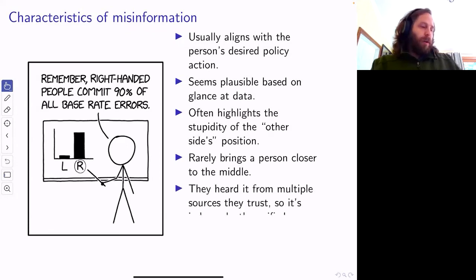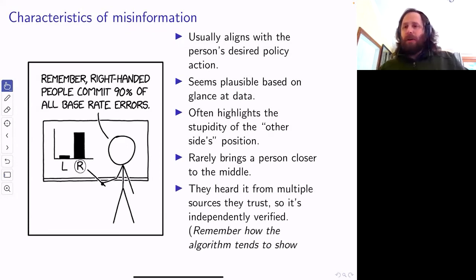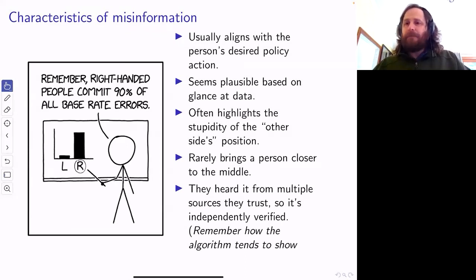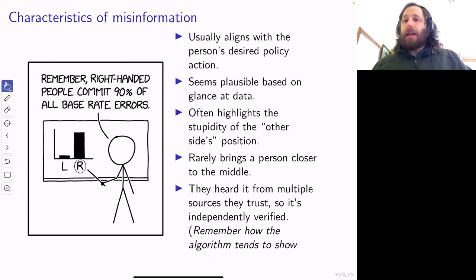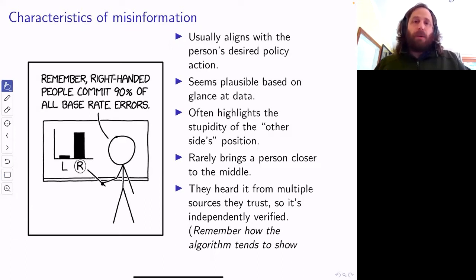The problem with multiple sources is that you think they're independent. Your brain naturally assumes 'hey, I've heard this from five people, they're independent.' But Twitter or Facebook is actively showing you certain types of content. The content starts from one person, gets to three or four other people, they repeat it, and all of a sudden you're hearing it from three or four sources you think are independent — but they aren't. It's a consequence of the algorithm controlling what we see that's led to this kind of effect.